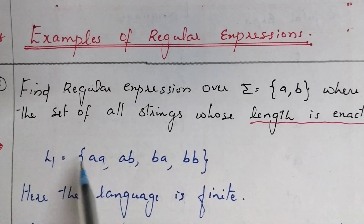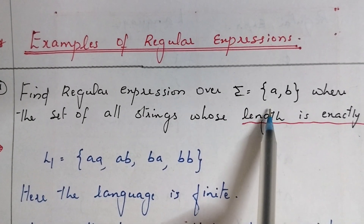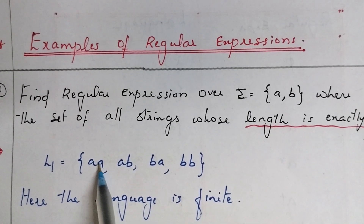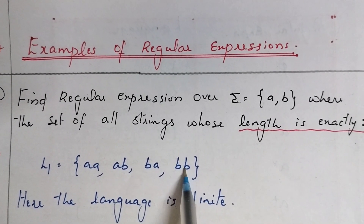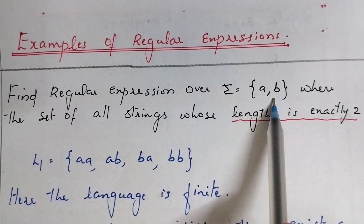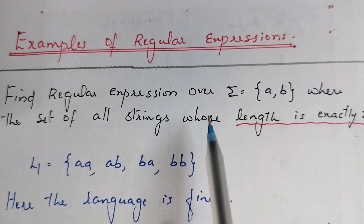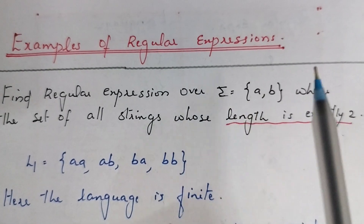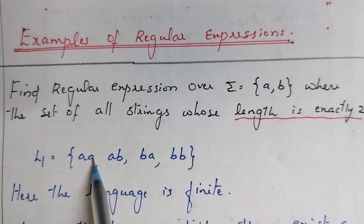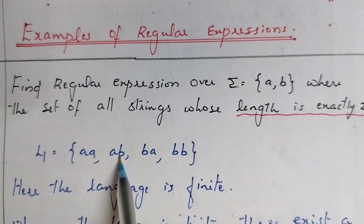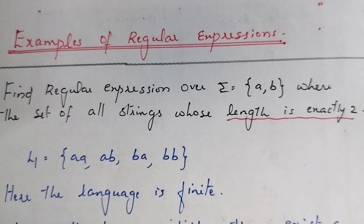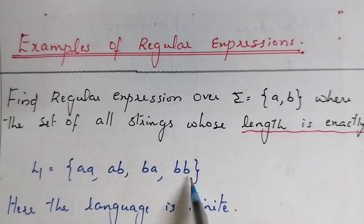So what will be the language? By using a and b with string length 2, we can generate: aa, ab, ba, and bb. So by using input symbols a and b, we generate the set of all possible strings where the length of each string is 2. That is aa, ab, ba, bb — this language is a finite language, it is not going to infinity.